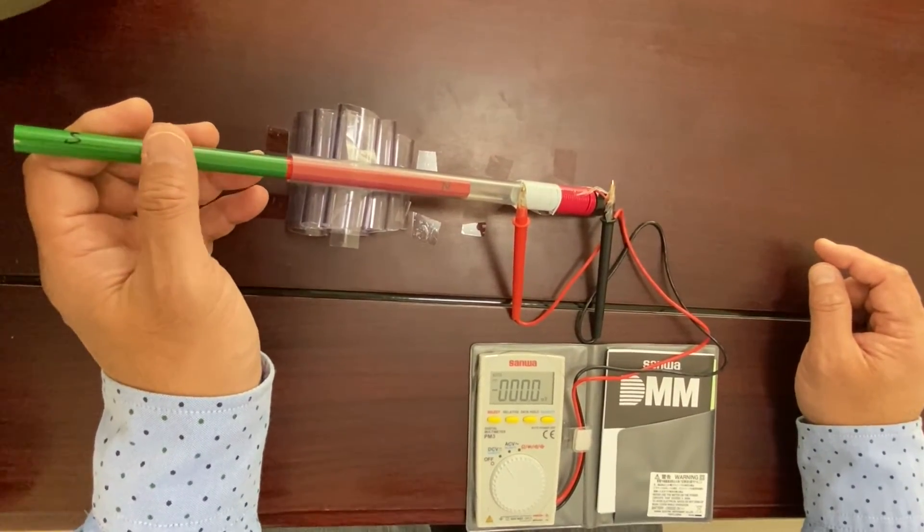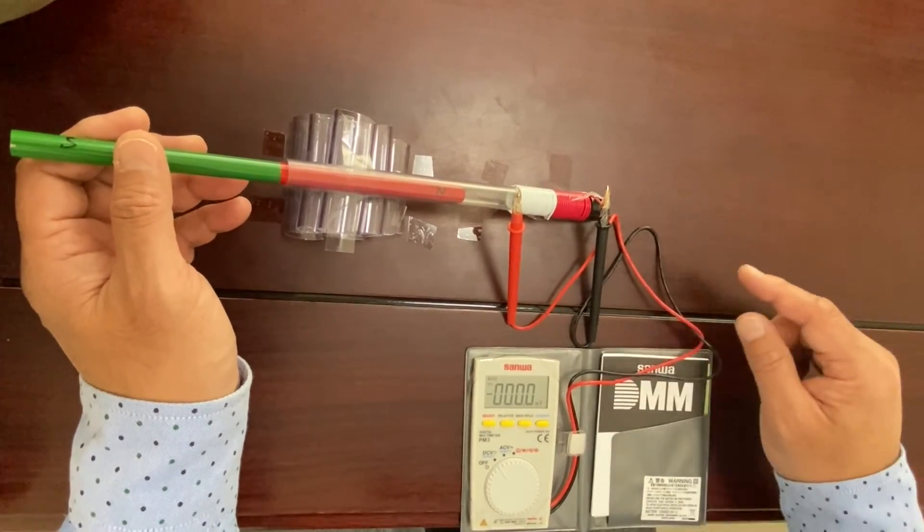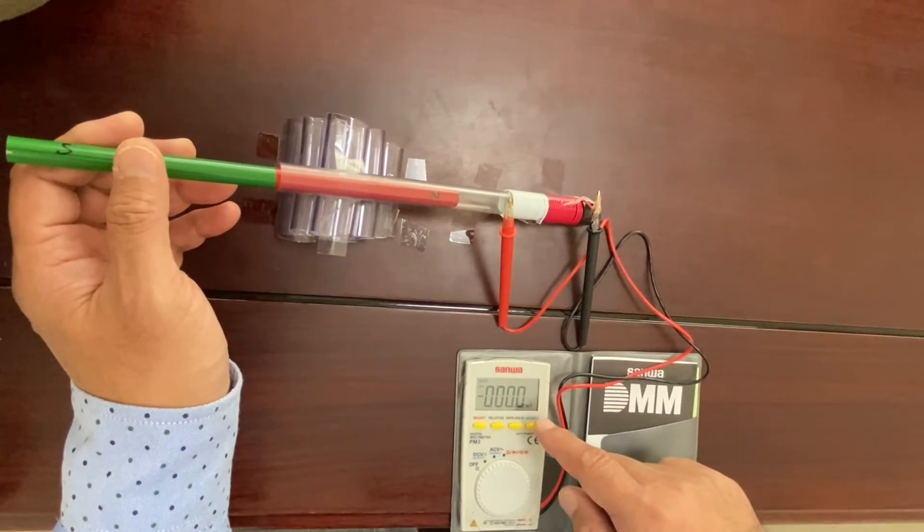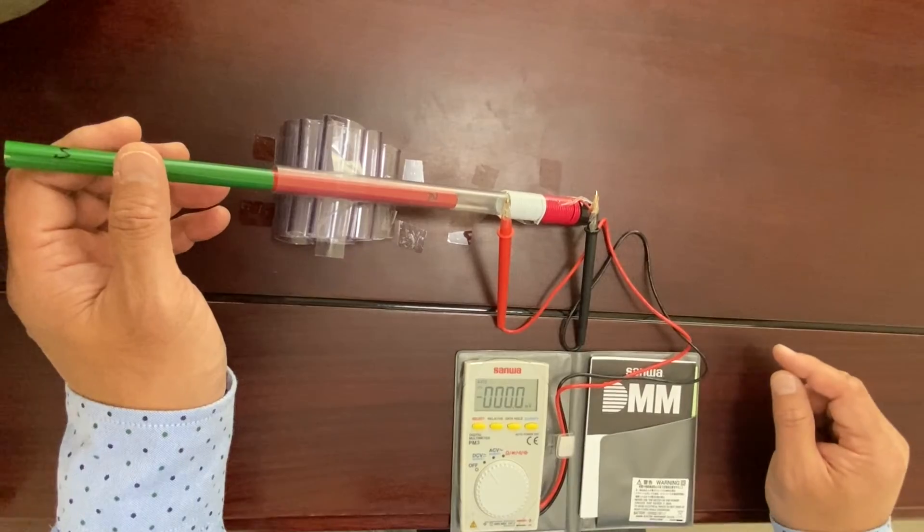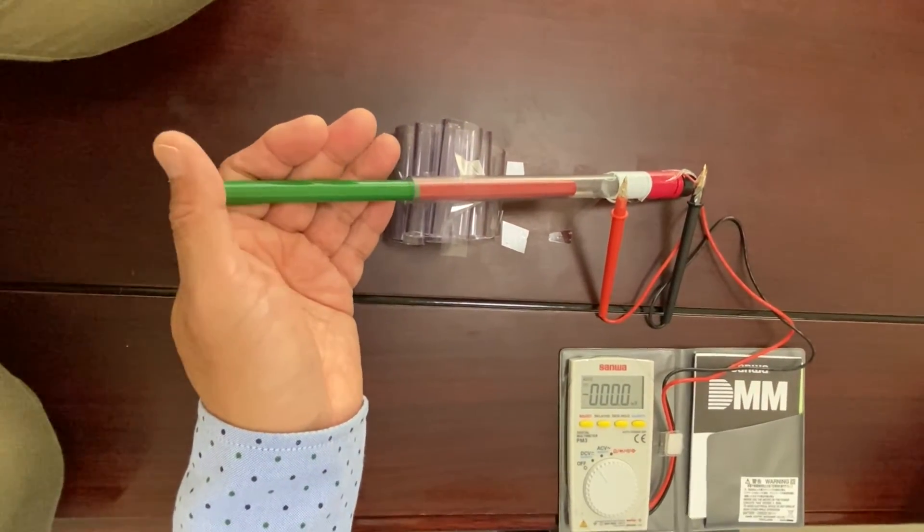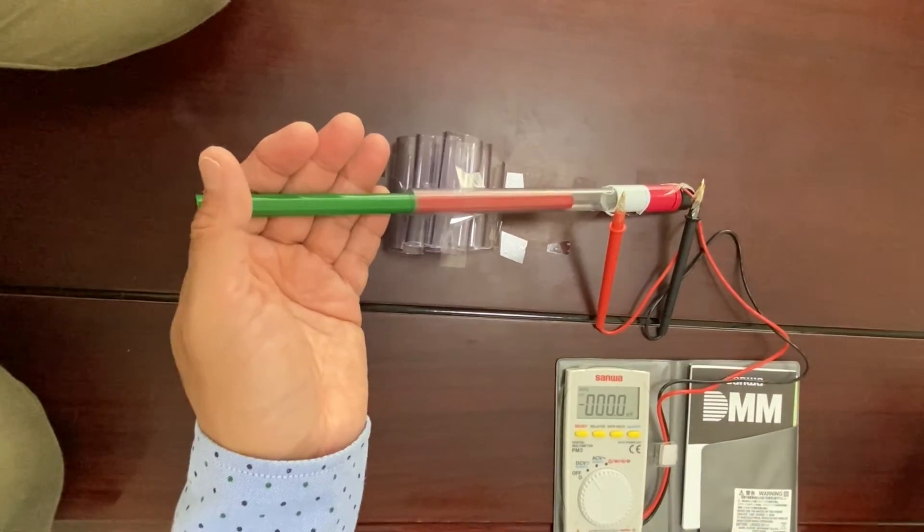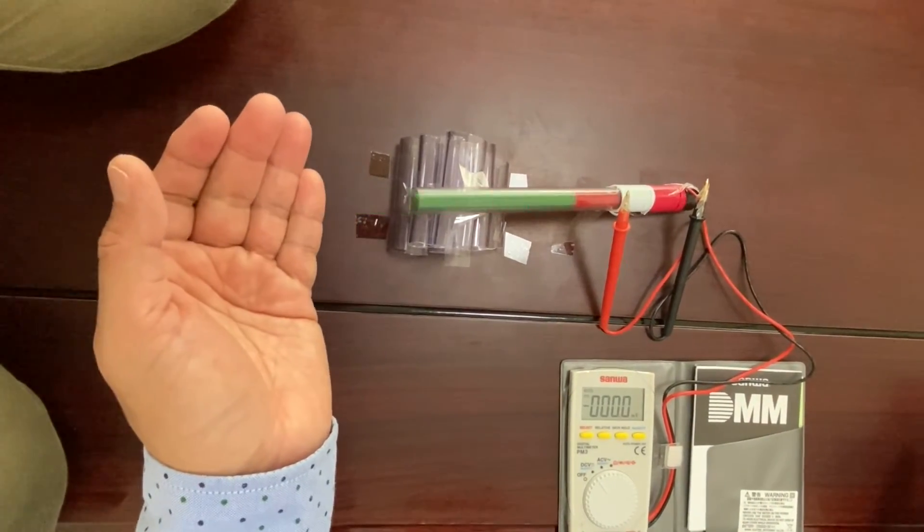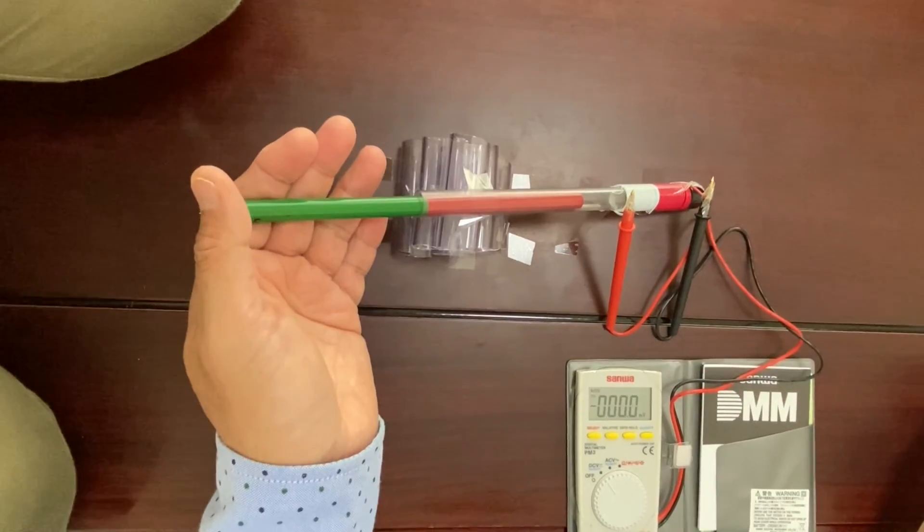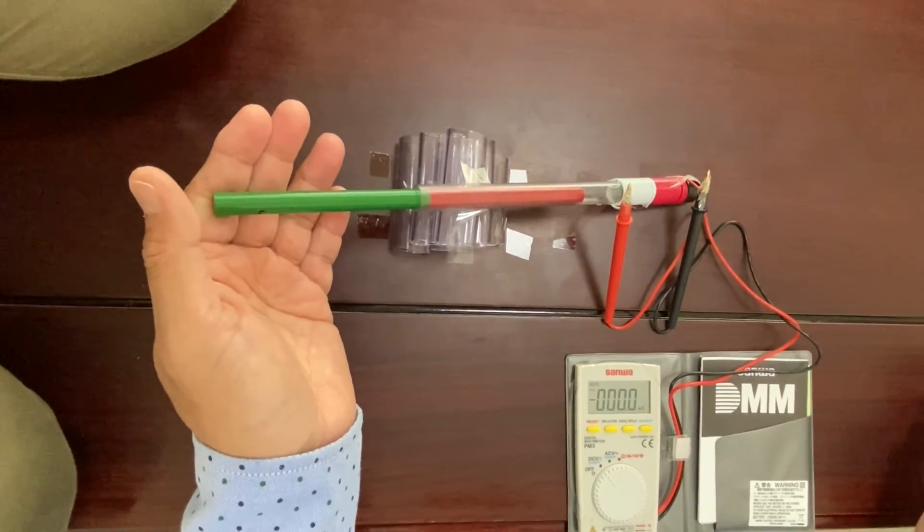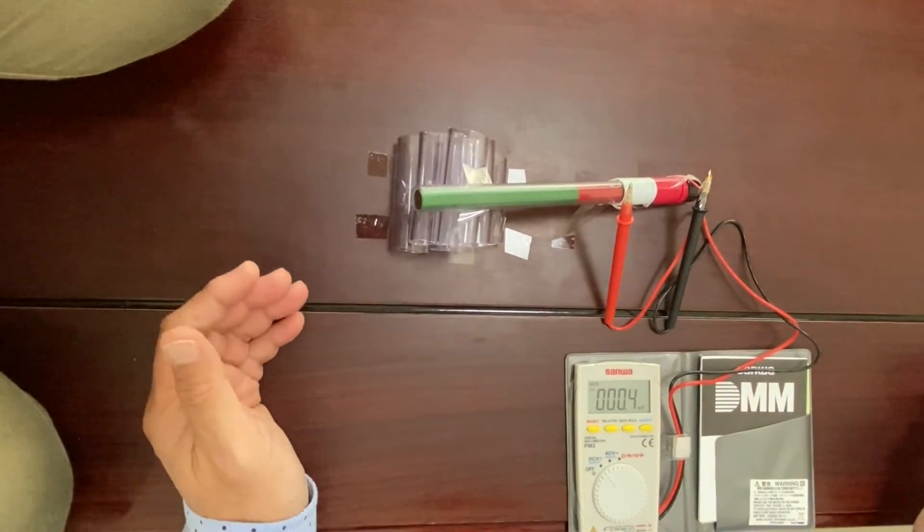I drop a magnet to the coils. You can read the numbers in the digital multimeter. 5.2. 4.8. 5.1.